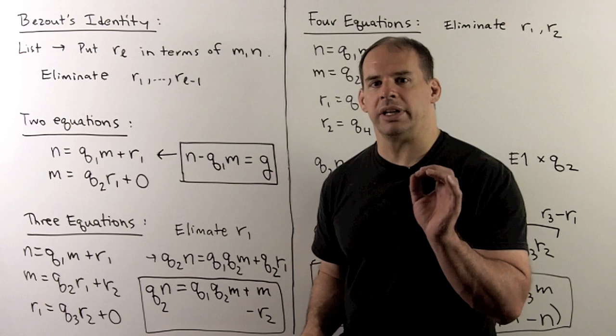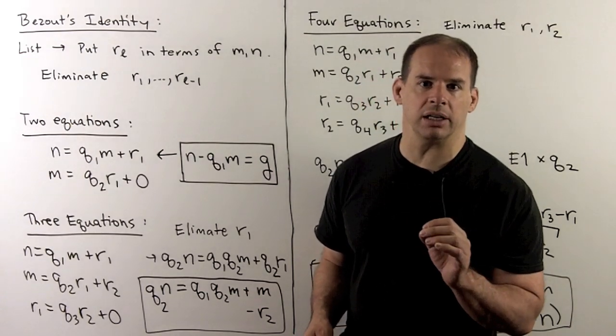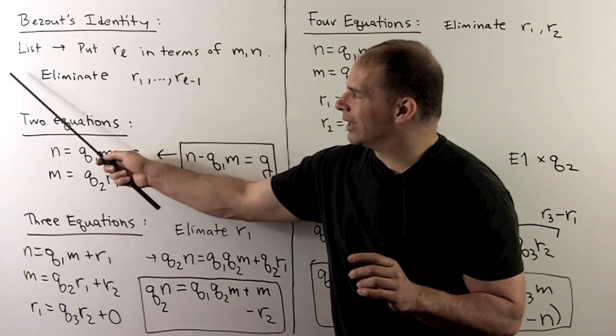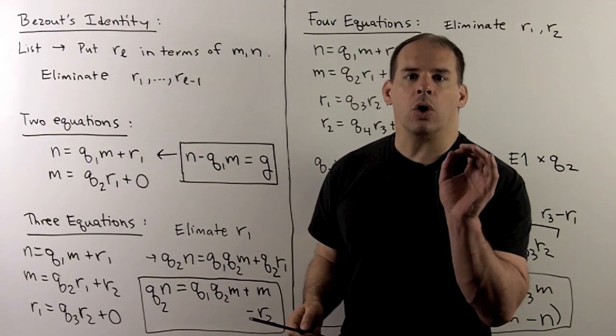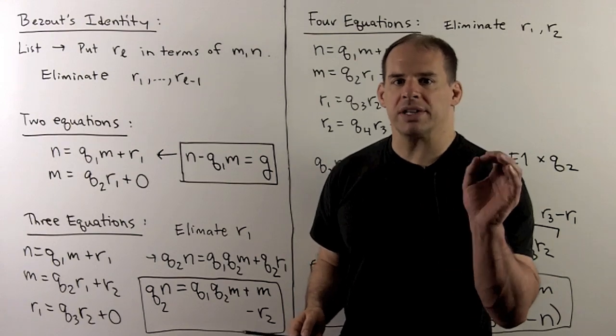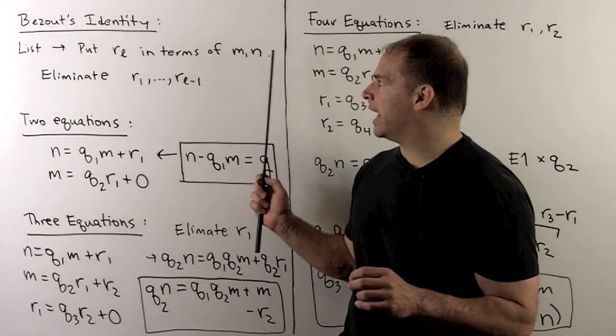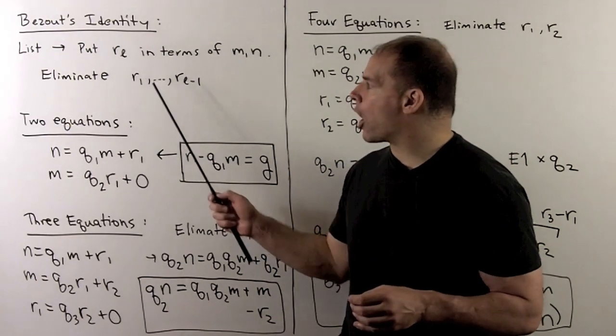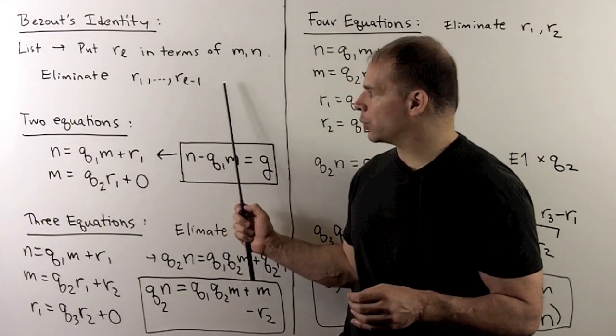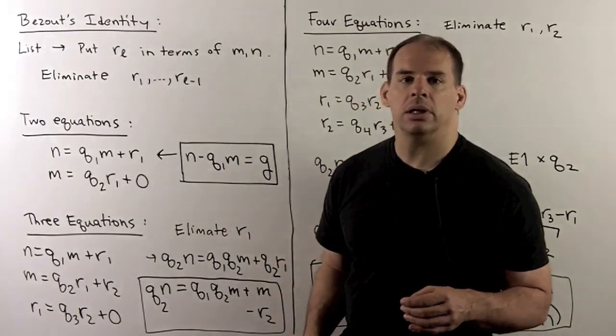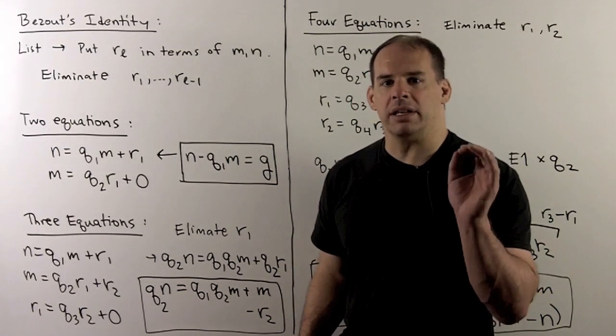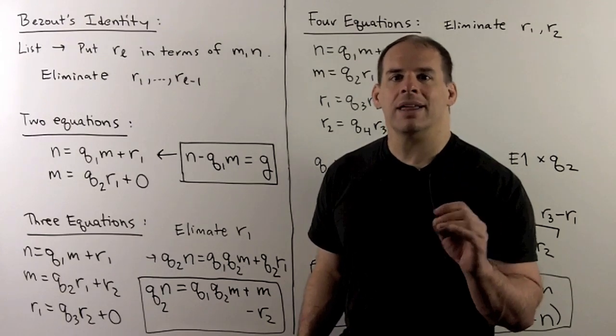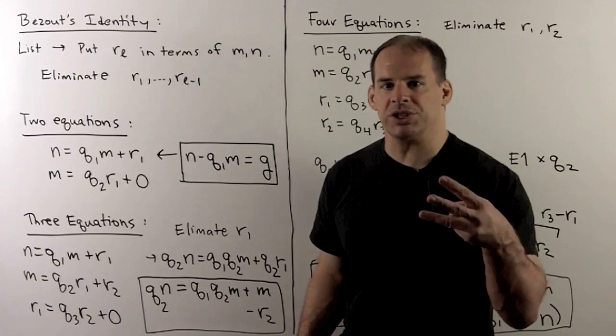Let's apply the Euclidean algorithm to find the j and k in Bézout's identity. Now, from the Euclidean algorithm, we're going to get a list of equations. So, our goal is to put r sub l, the greatest common divisor, in terms of m and n. So, our work is to get an equation where we've eliminated r1 through r sub l minus 1. For here, we'll convince ourselves that it can be done when we have two, three, or four equations. Then, in general, there's an algorithm and three different ways to proceed.